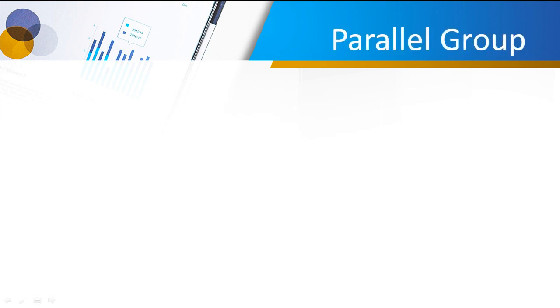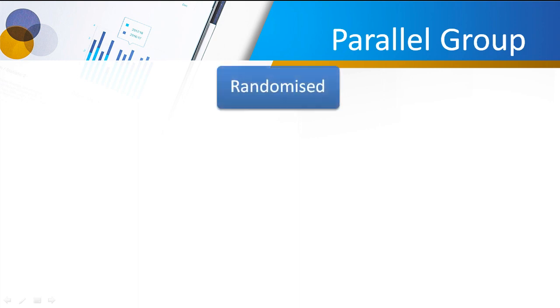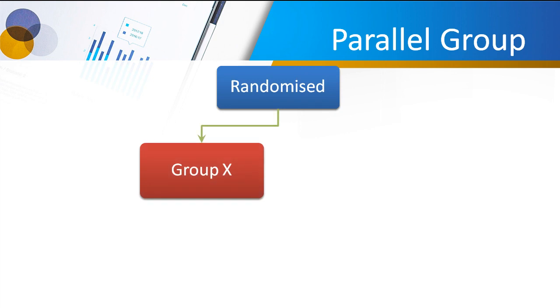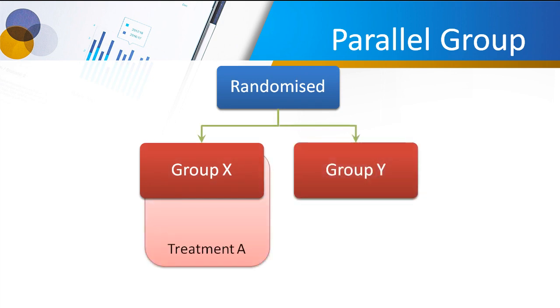One way of randomising is called a parallel group, which is where we have group X of patients and they get treatment A, and group Y get treatment B. That's quite straightforward.